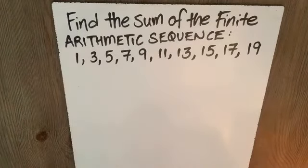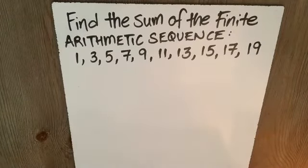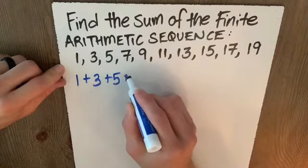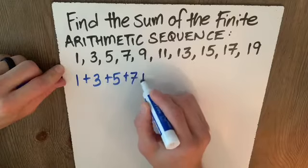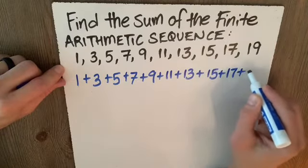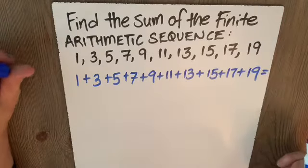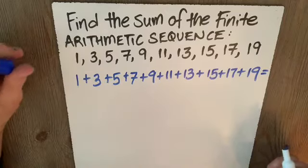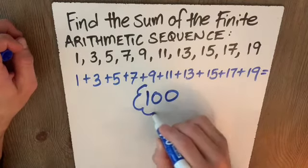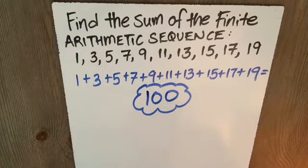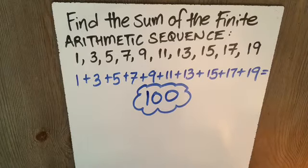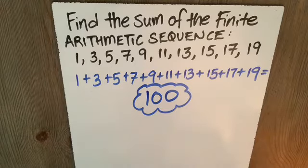When we're asked to find the sum of this finite arithmetic sequence, what they're really asking is, can we find the sum of the series? So if I want to convert this sequence to a series, it's as easy as replacing the commas with plus signs. And, of course, I could take the fourth grader's view of this and add one plus three plus five plus seven plus nine plus 11 plus 13 plus 15 plus 17 plus 19. I better make sure my arithmetic skills are strong to come up with 100. Now, that's a fine method for doing this.